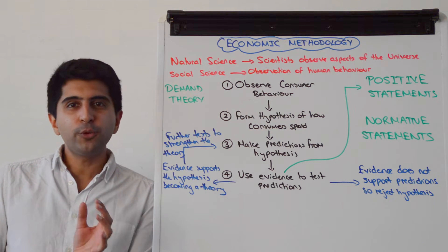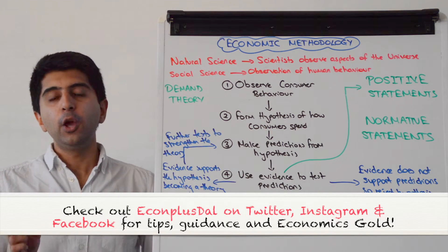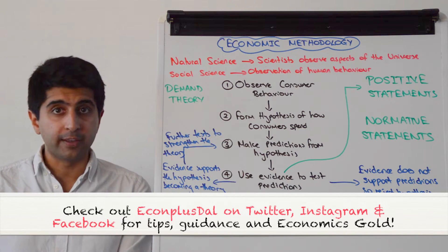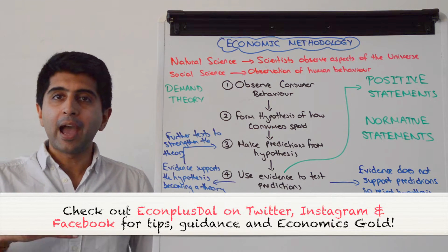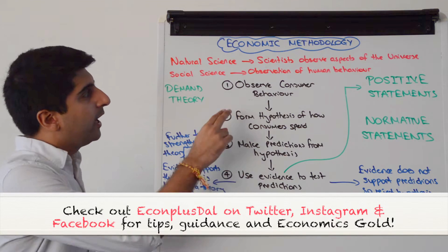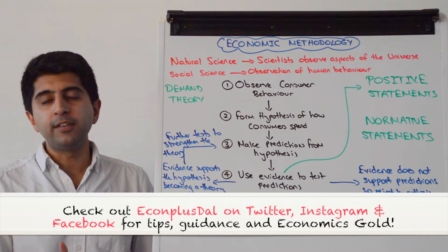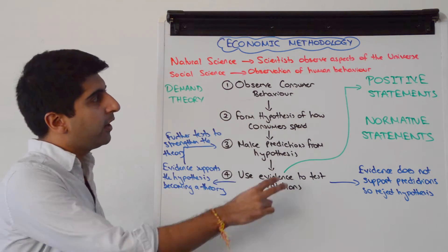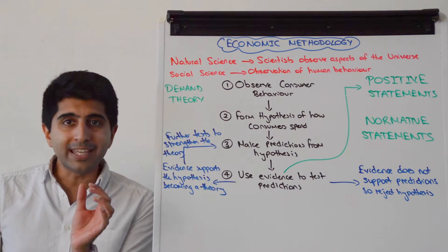Hi everybody! What do economists actually do? Well, to understand that we first need to make a distinction between a natural science and a social science. A natural science is when scientists observe aspects of the universe and form theories around their observations, whereas a social science is when observations are made of human behavior and theories are then made around those observations. So social science is very much focused on the study of human behavior, which is what economics is.